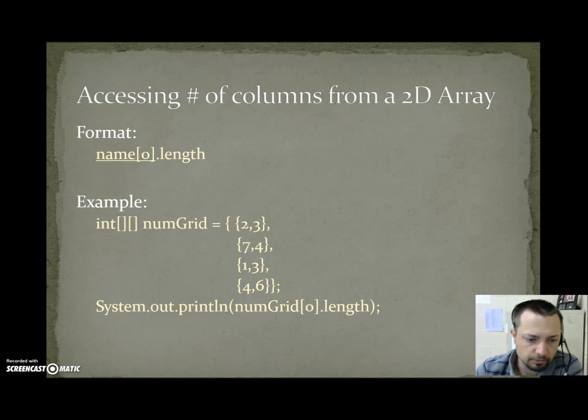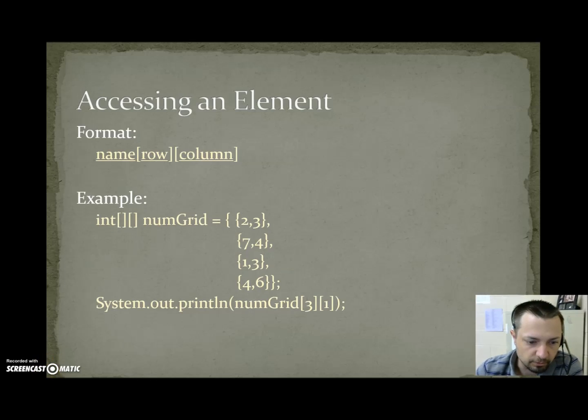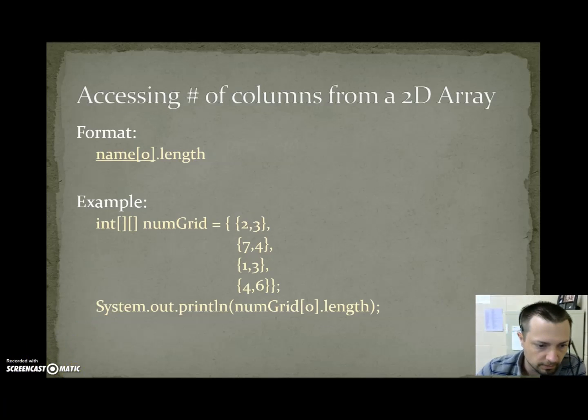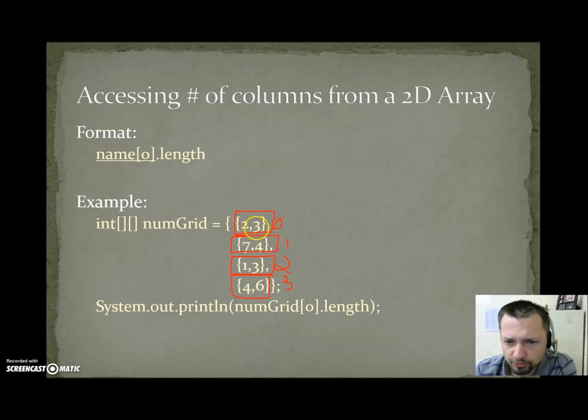Because if we access location 2... Let me grab the pen real quick. Let's go back. There, it finally activated. So we want to pin. This is row 0. This is row 1. This is row 2. This is row 3. So when we say numGrid 0, we're accessing the row of information that is 2, 3. So, 2, 3 is the row we're grabbing. If we were to ask that row once it's been pulled out how long it is, that would give us 2.